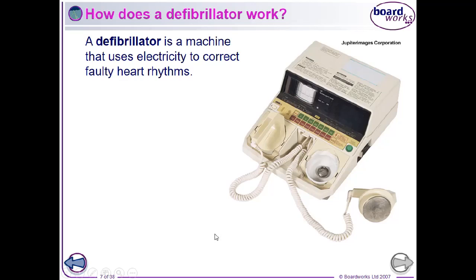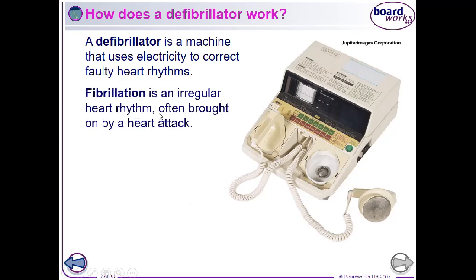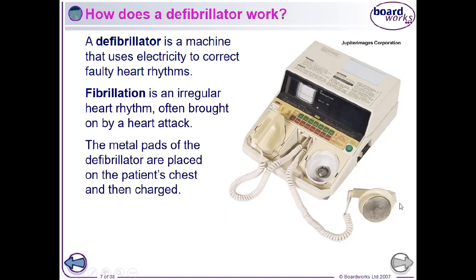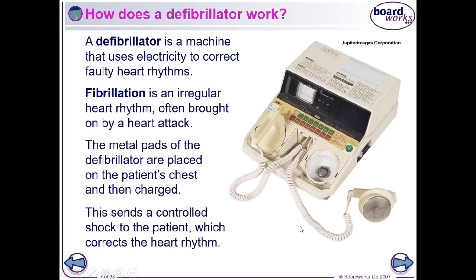A defibrillator is used for restoring heartbeats to a regular rhythm. Fibrillation is an irregular heart rhythm, often brought on by a heart attack, meaning the heart is not pumping as it should and blood is not getting through the lungs and around the body. Metal pads of the defibrillator are placed on the patient's chest — one above the heart and one on the side — so that the current between the plates passes through the heart. The defibrillator is charged with static electricity, and when we press the button to give the shock, it discharges through the person's heart, starting up a regular heart rhythm and resetting the heart to beat normally.